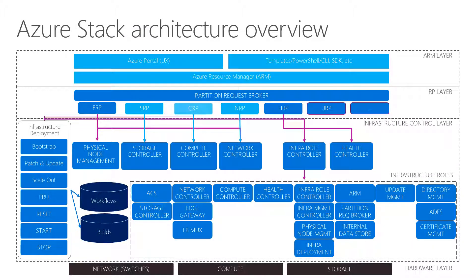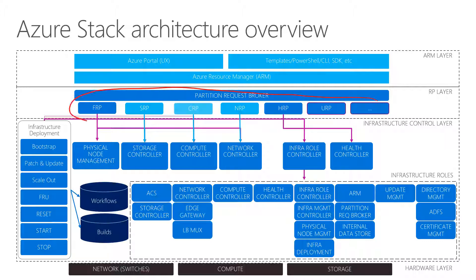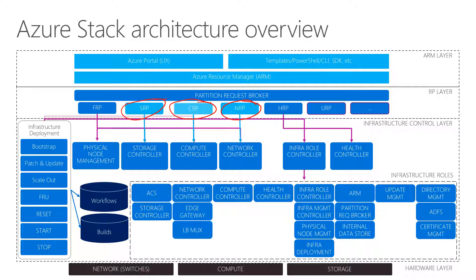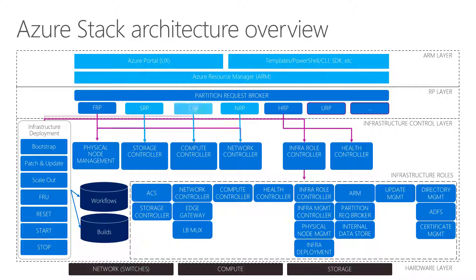Here's a more detailed architecture overview. We have two different clients: our Azure portal and templates, PowerShell, CLI, and all other services. Both use the Azure Resource Manager as an abstraction layer. All requests go through Azure Resource Manager, which then uses a broad set of resource providers — the compute resource provider, network resource provider, storage resource provider, and all the others. At the bottom you can see the hardware layer, which is implemented using switches, compute, storage, and all the physical underlying services — and this is, up to a certain degree, exactly the same in Azure.